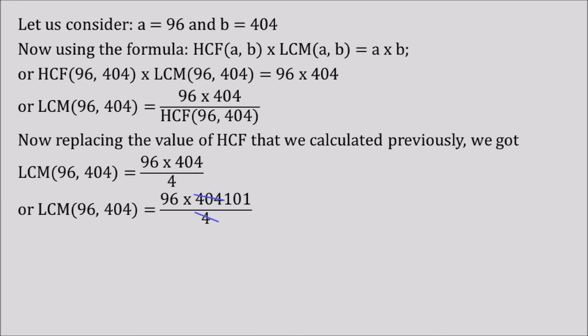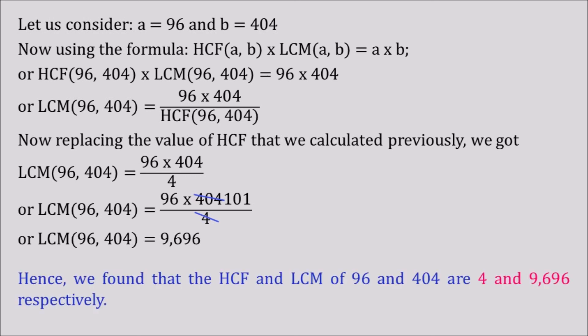Solving further, we can see that 404 is divisible by 4, giving us 101. So we have 96 × 101. Multiplying 96 by 101, LCM of 96 and 404 equals 9696. Hence we have found that the HCF and LCM of 96 and 404 are 4 and 9696 respectively.